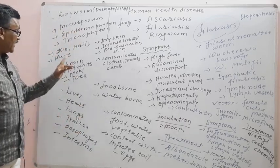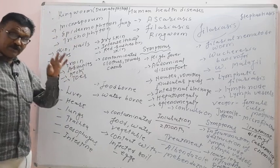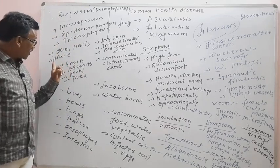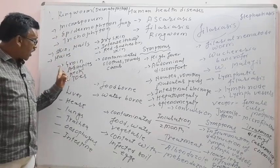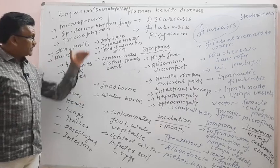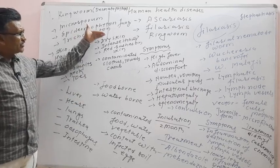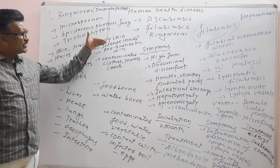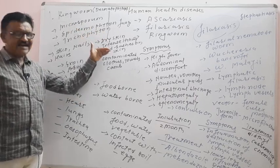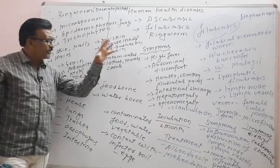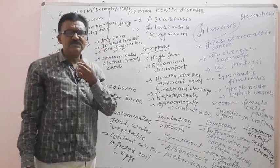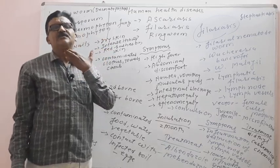Infection takes place in body parts including the groin, armpit, neck, and toes. Symptoms include dry skin, intense itching, red rashes, and red spots on the skin.